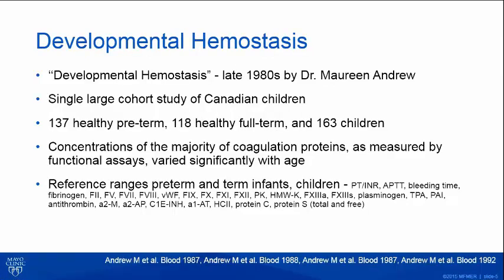Developmental hemostasis — you might be familiar with this term. It was first coined in the late 1980s by Dr. Maureen Andrew, who published three landmark papers using a single large cohort of Canadian children: 137 healthy pre-term, 118 healthy term babies, and 163 children between age 1 and 16. They were able to study a majority of coagulation proteins by functional assays and establish reference ranges showing they varied significantly in an age-dependent manner.